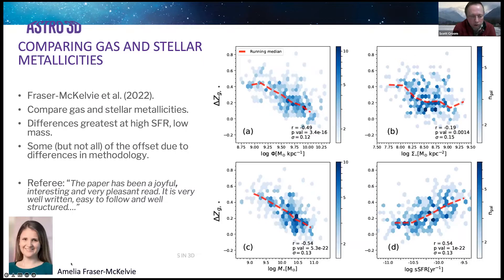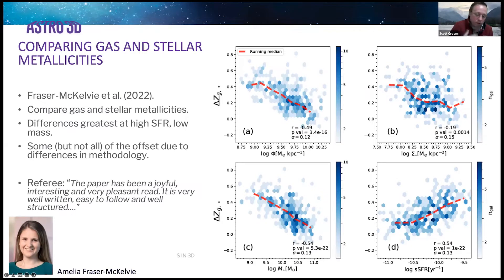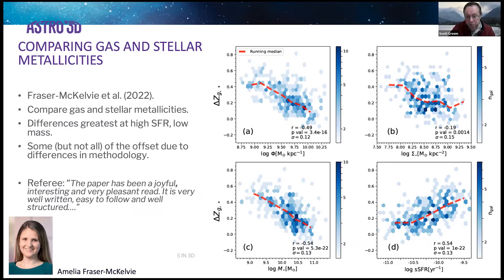Another aspect of metallicity we looked at is a really nice piece of work by Amelia, who is speaking after me on a different subject. Amelia compared gas and stellar metallicities in the SAMI galaxies and found some really interesting trends: the difference between gas and stellar metallicity — this delta Z_G-star — trends with specific star formation rate, but also stellar mass and stellar surface density. This is one of the first times this comparison has really been done properly. It's complicated because of calibration issues, but the real offsets are actually telling us about the enrichment history of galaxies. The referee's report was one of the best I've ever seen — the referee said the paper had been a joyful, interesting, and very pleasant read. Hats off to Amelia.